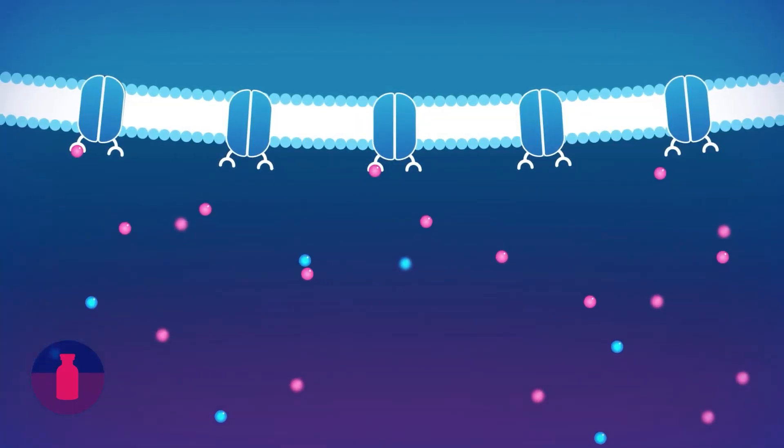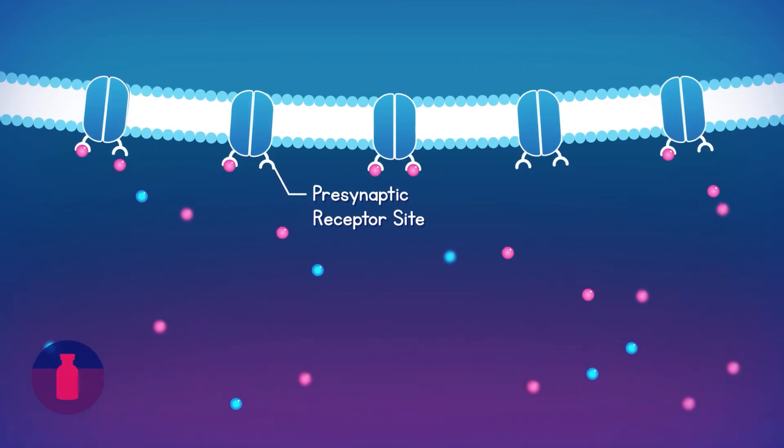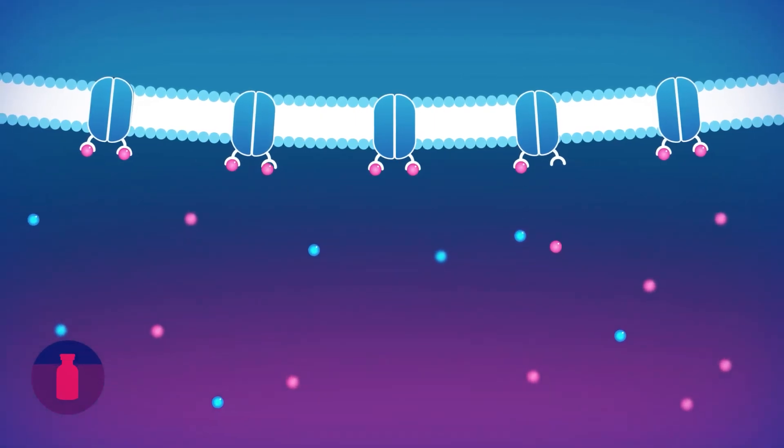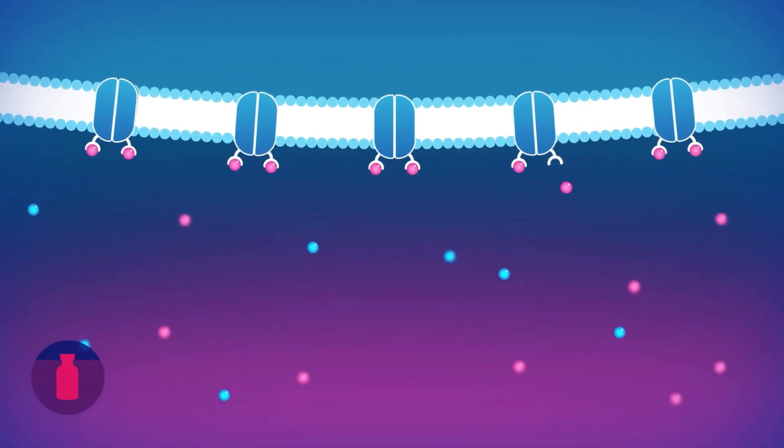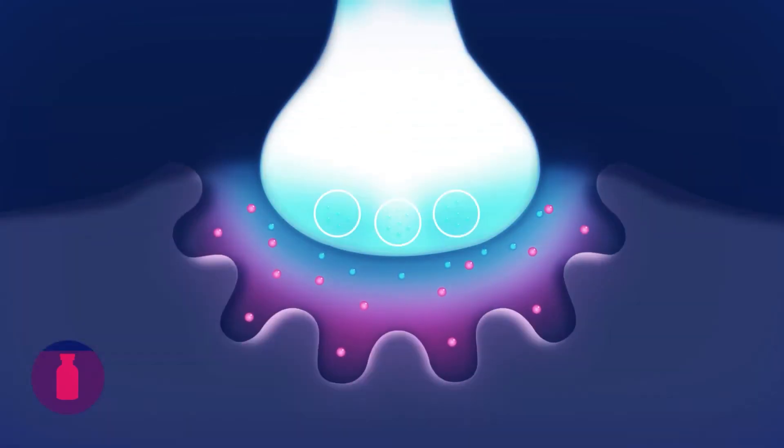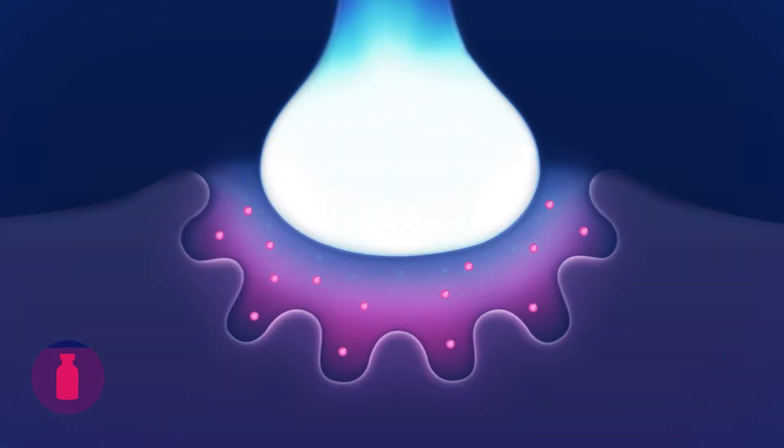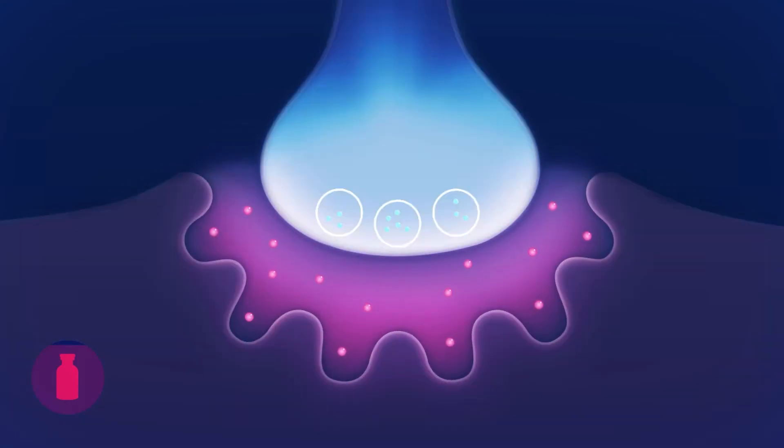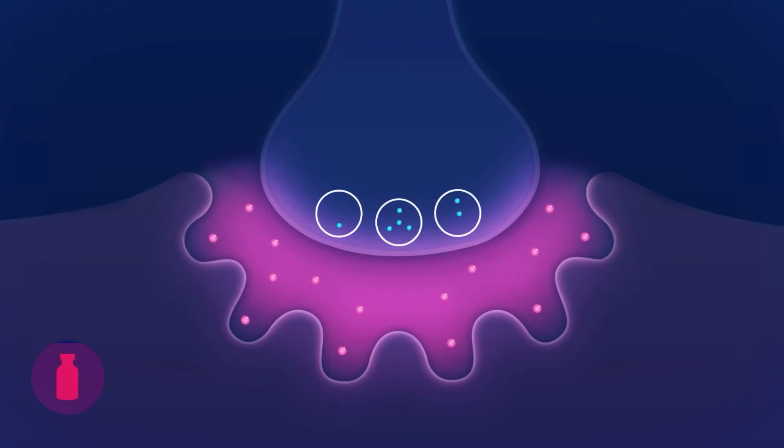The non-depolarizing agent also binds to the pre-synaptic receptors on the motor neuron, thereby also blocking the positive feedback loop where choline from the neuromuscular junction is recycled back into the end bulb of the neuron, thus reducing the overall acetylcholine reserve pool. As the overall acetylcholine reserve pool is reduced, subsequent action potentials result in lower and lower intensity muscle contractions.